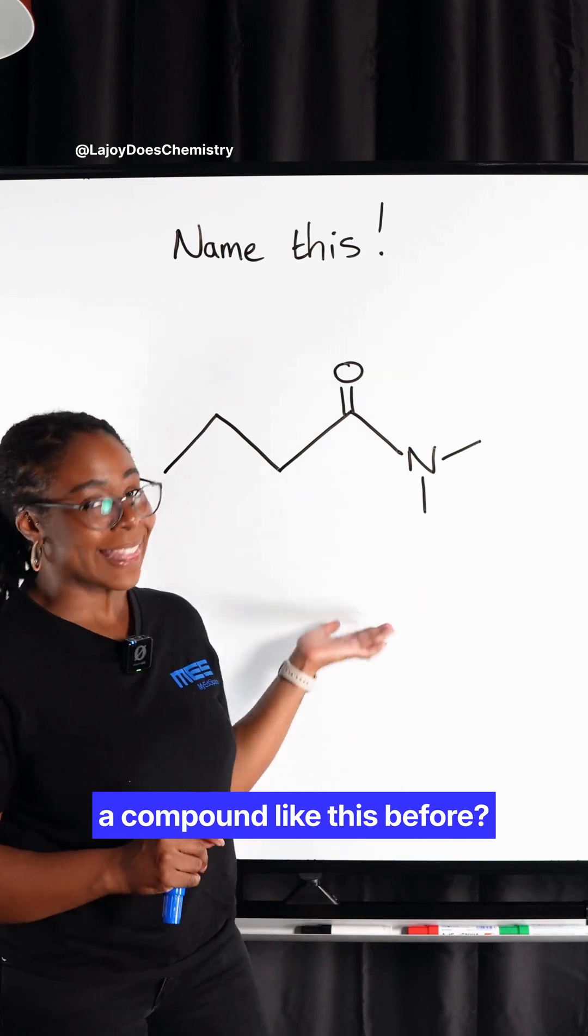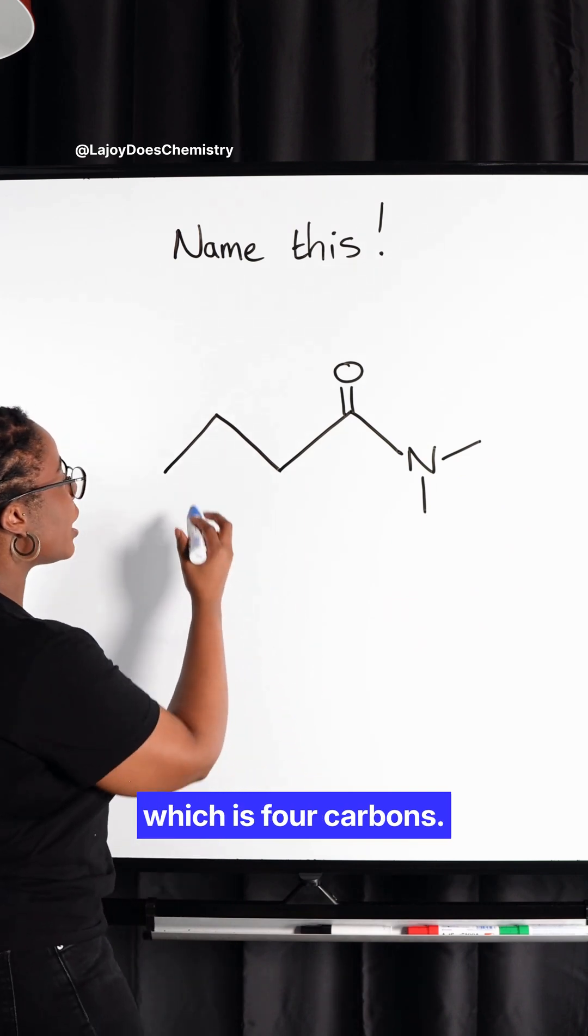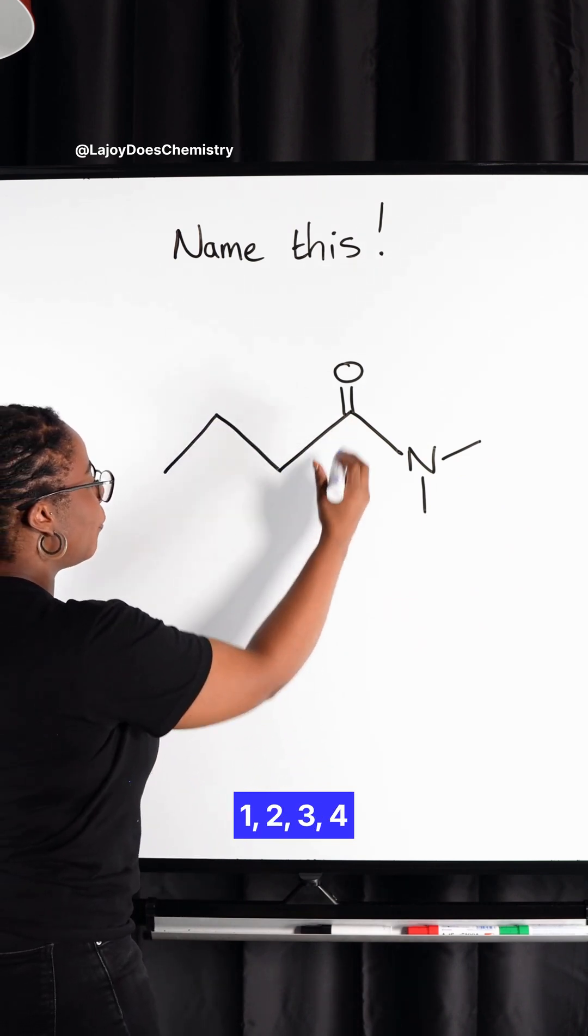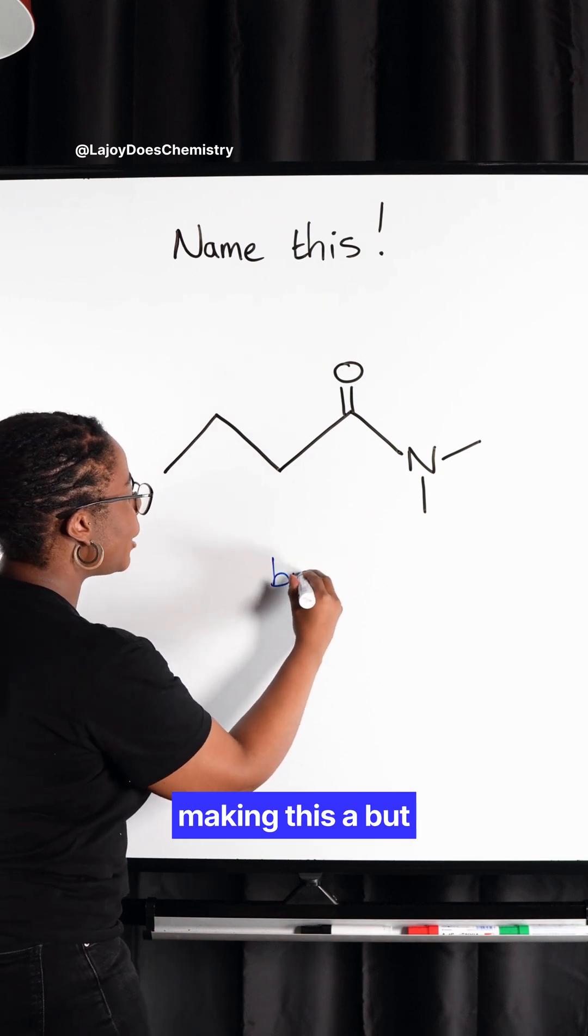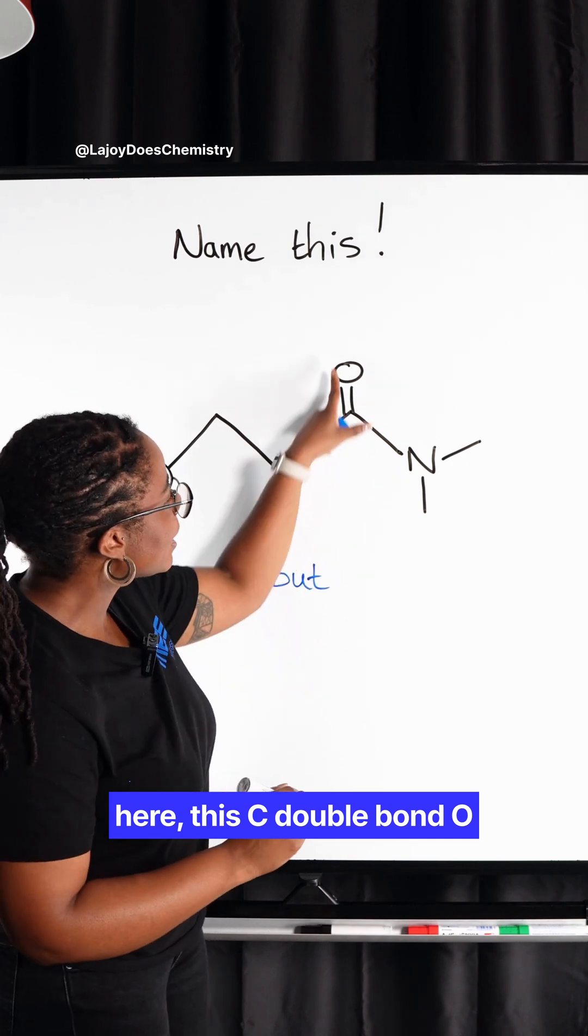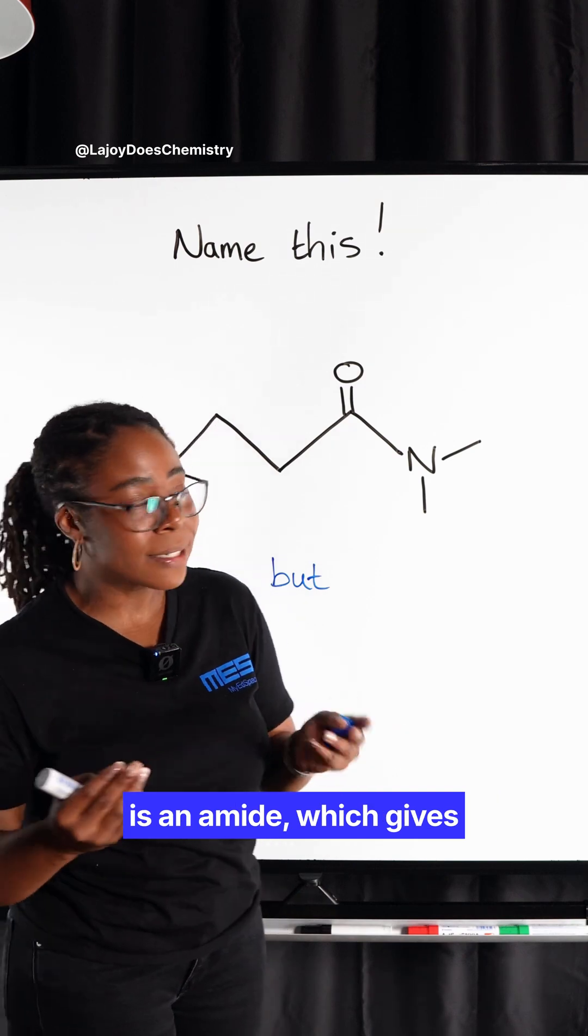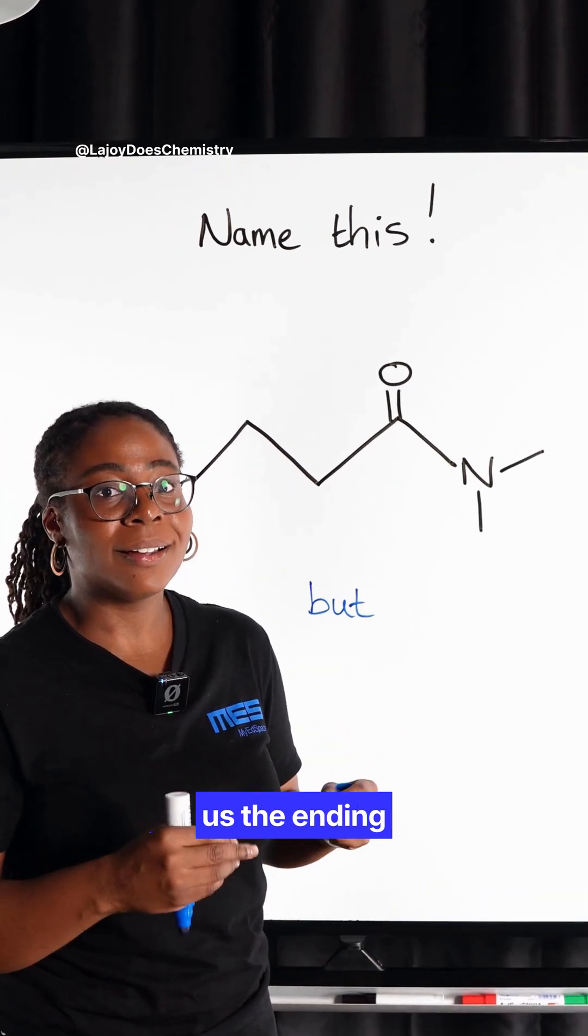Have you ever named a compound like this before? Let's start with our longest carbon chain which is four carbons: one, two, three, four, making this a butane. Now this functional group here, this C double bond O connected to a nitrogen, that is an amide which gives us the ending anamide.